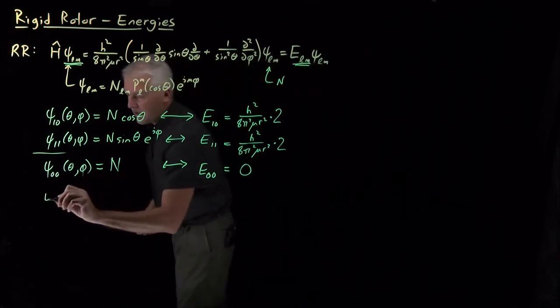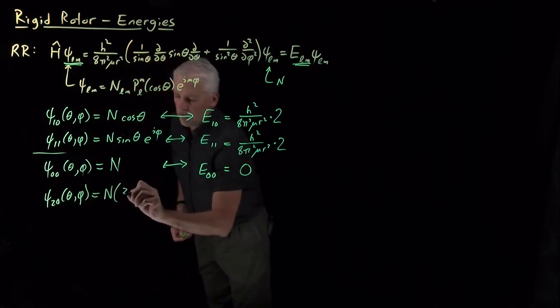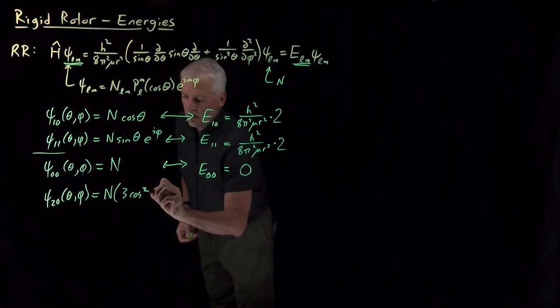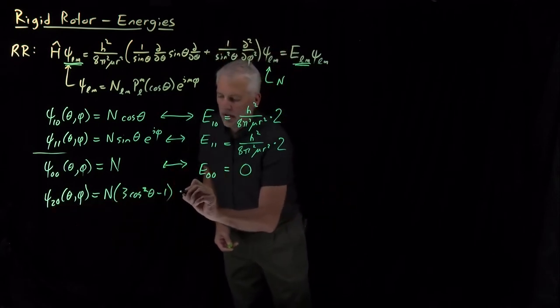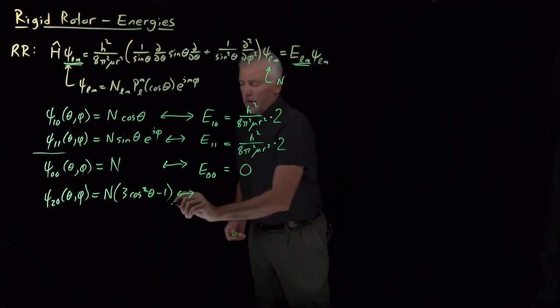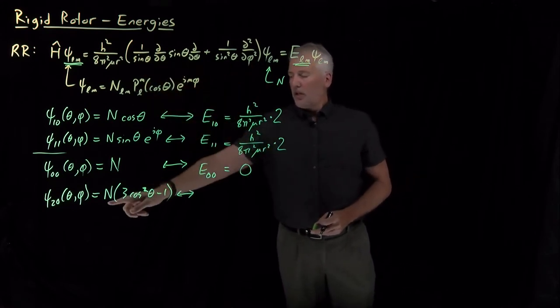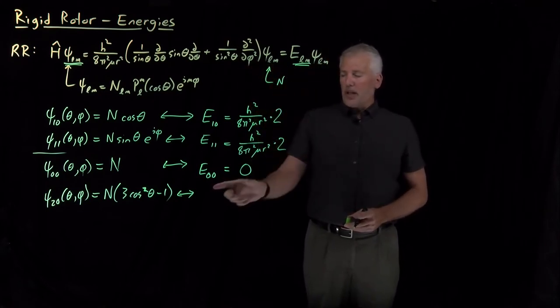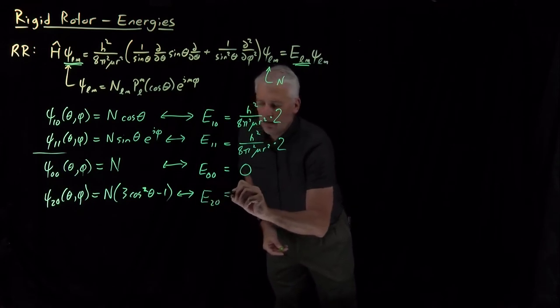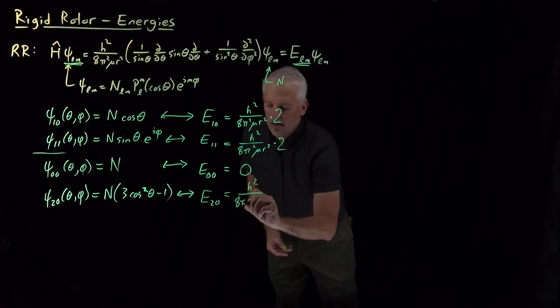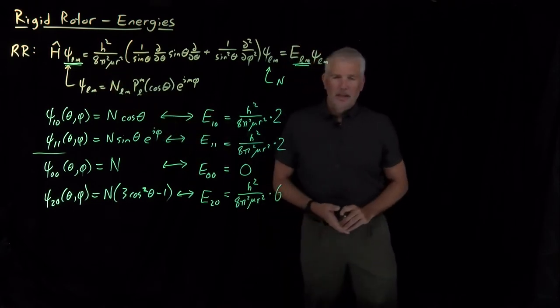There are other, more complicated wave functions. When we write down the 2,0 wave function, that one is a little more complicated. It involves a quadratic dependence on cosine theta, as we know because it's an L equals 2 function. We'll skip the math. I think you've seen me evaluate Schrödinger's equation enough times on wave functions. If we take these various derivatives of this particular function and evaluate what we get, we're going to get back the same function we started with multiplied by a constant. And the constant, in this case, will be, not surprisingly, same collection of constants from here, and then another number multiplying that collection of constants.